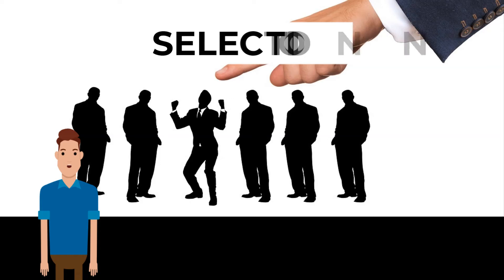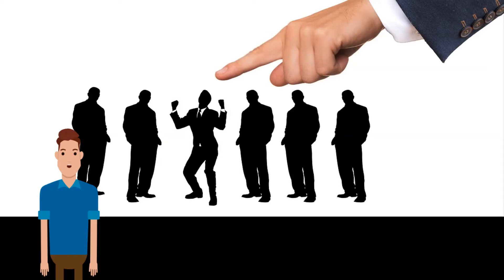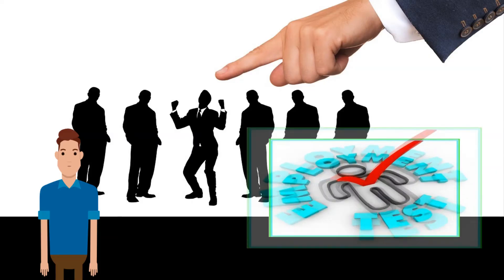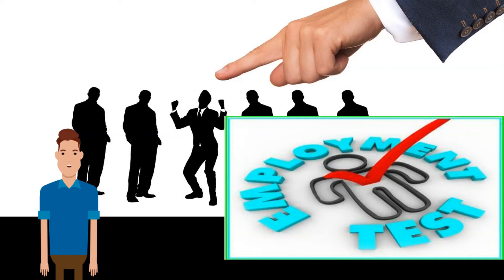Now let's move on to the selection process. Applicants who are shortlisted will be interviewed by the HR manager. They will also contact the referee provided by the applicant — a referee could be a previous employer or colleague who can give a confidential opinion about the applicant's reliability, honesty and suitability. Interviews allow the manager to assess the applicant's ability to do the job, as well as their personal qualities, character and personality.